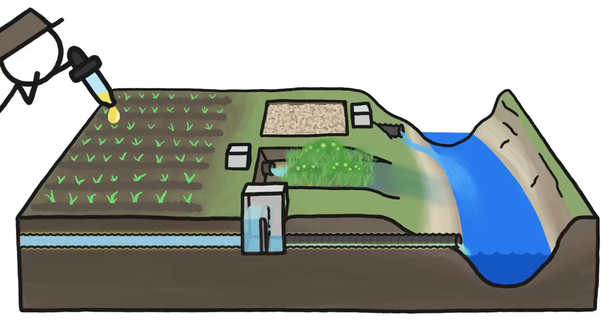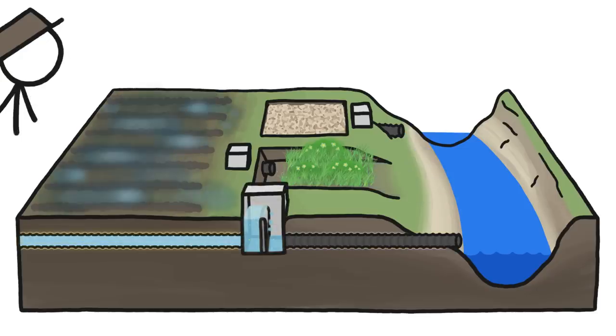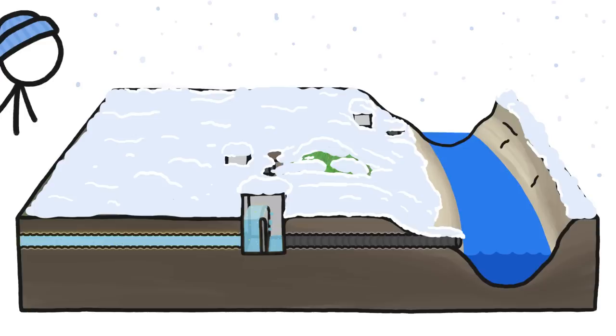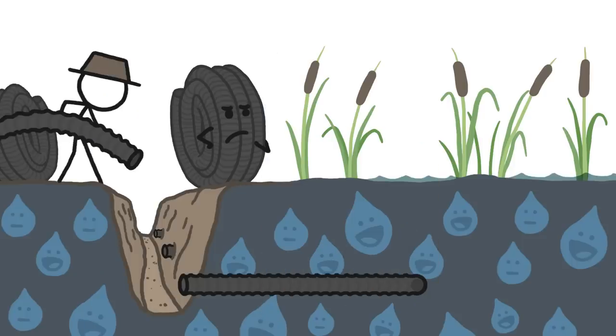And we can also retrofit the underground pipes to slow down the flow of water when it's okay to have a wet field, like when we're not growing crops. But there is another huge problem with drainage.